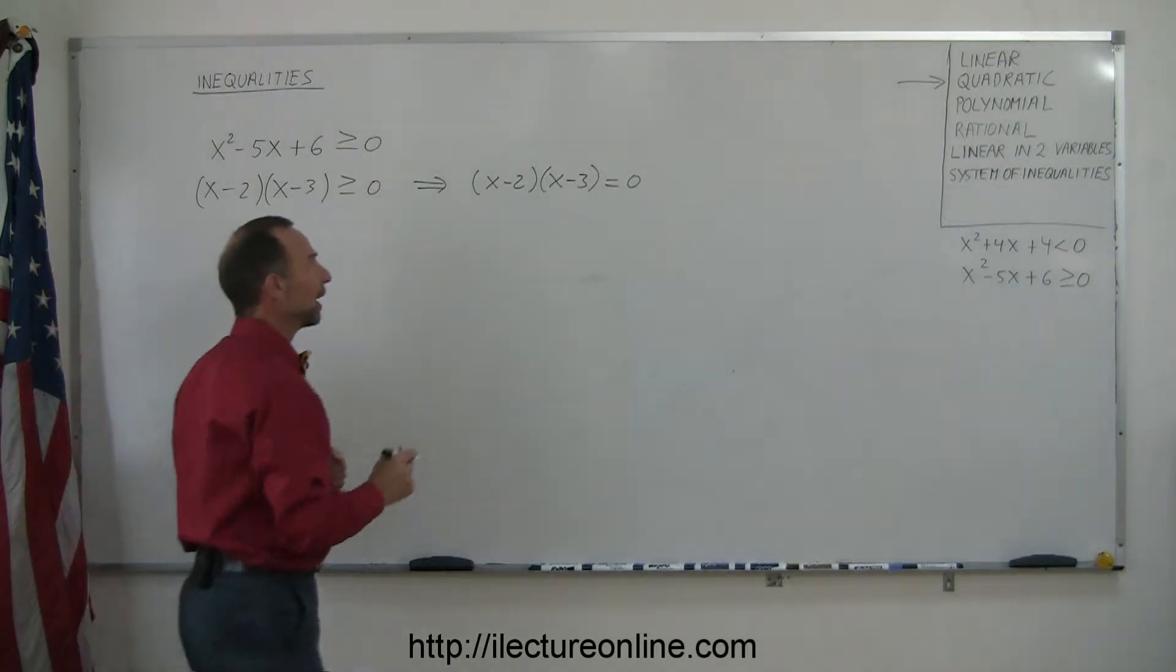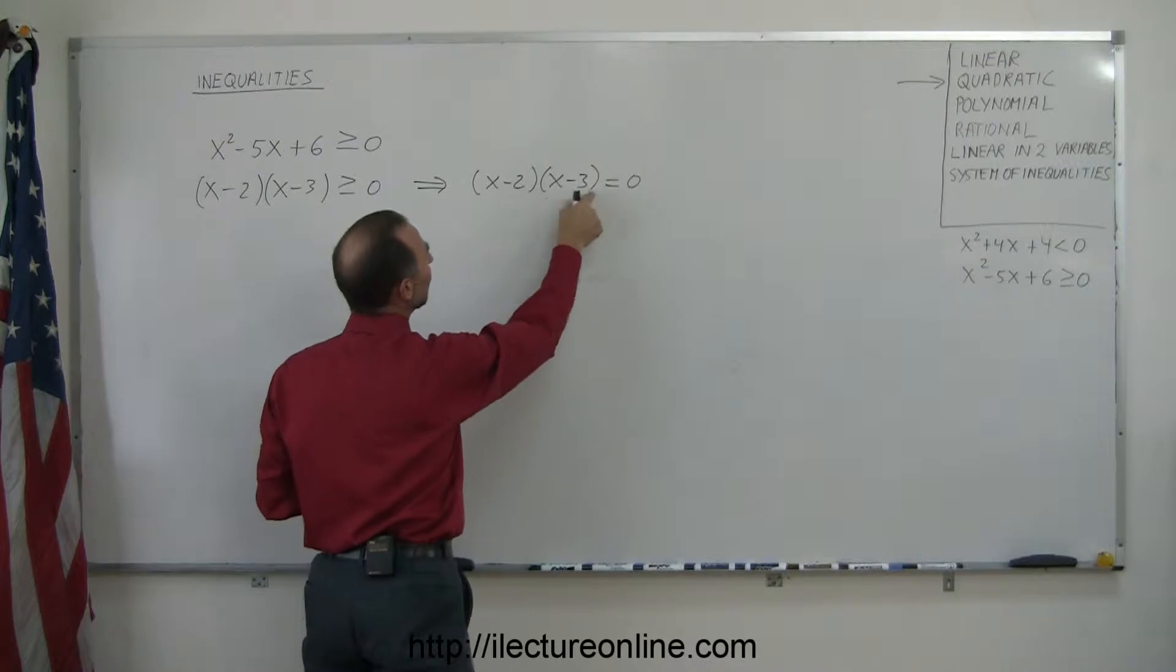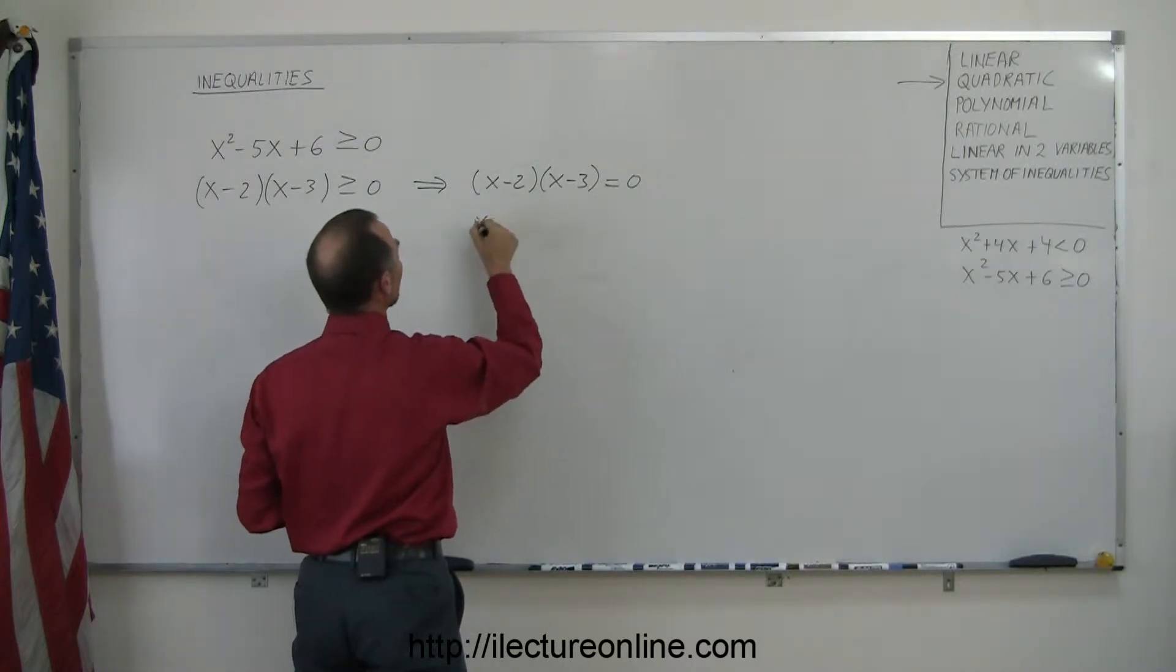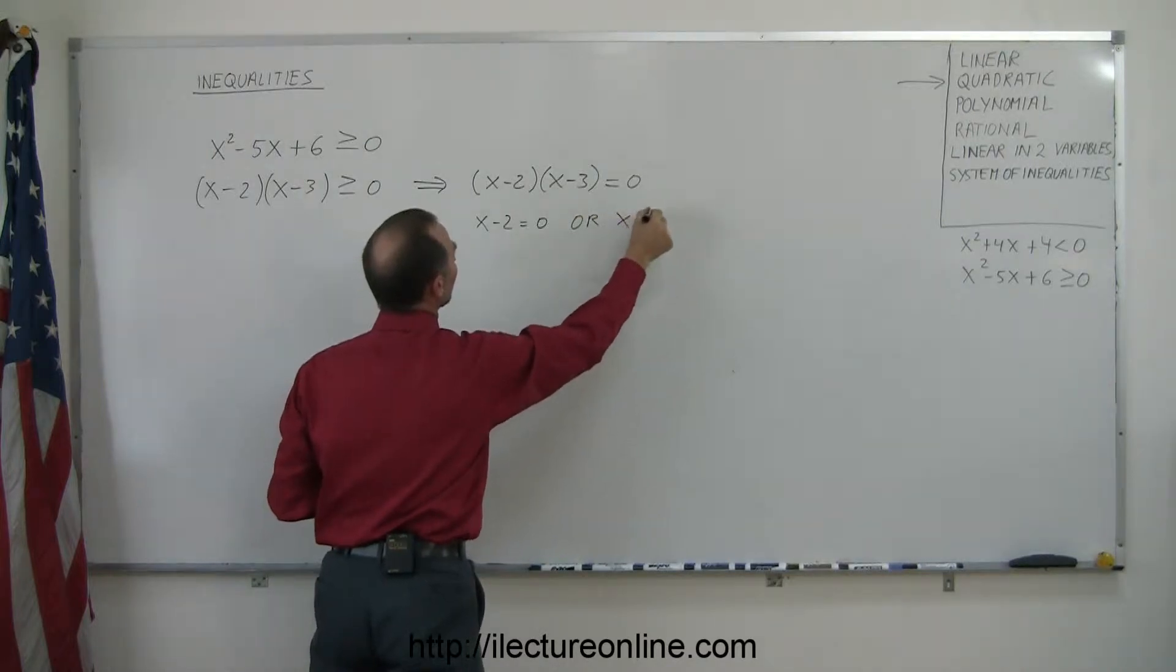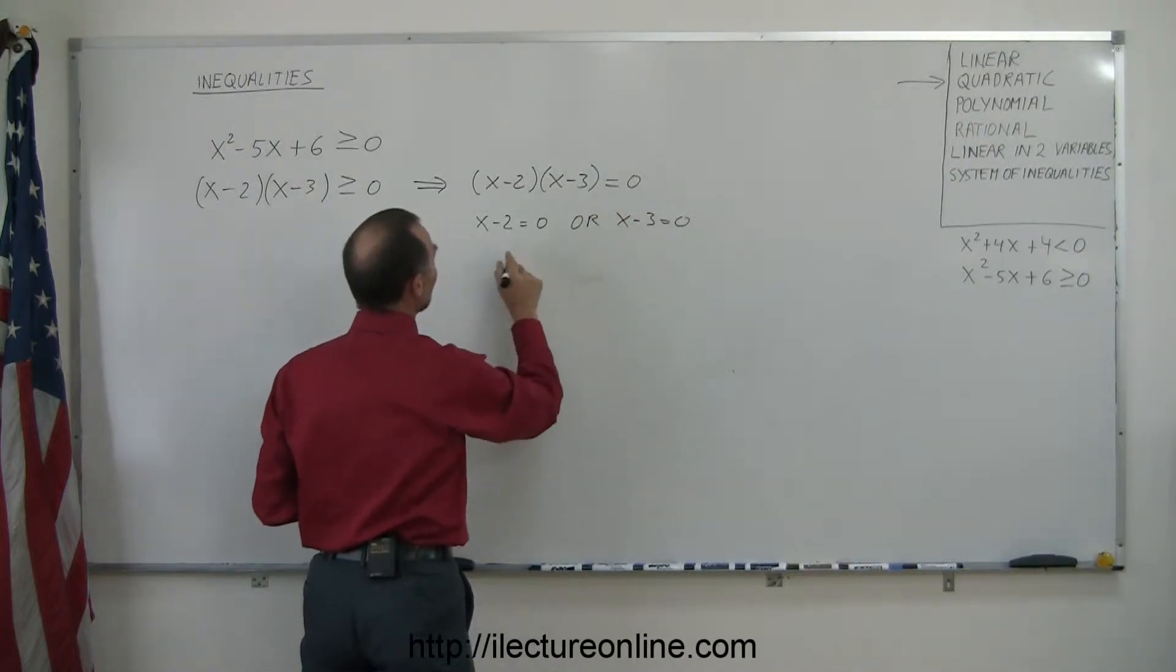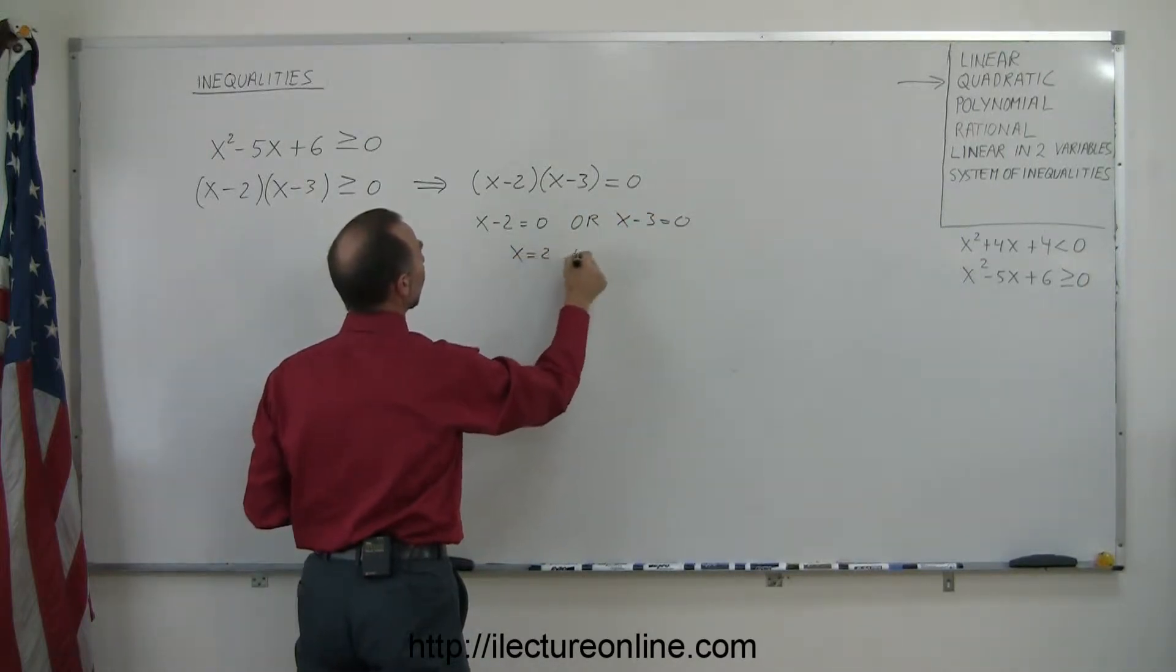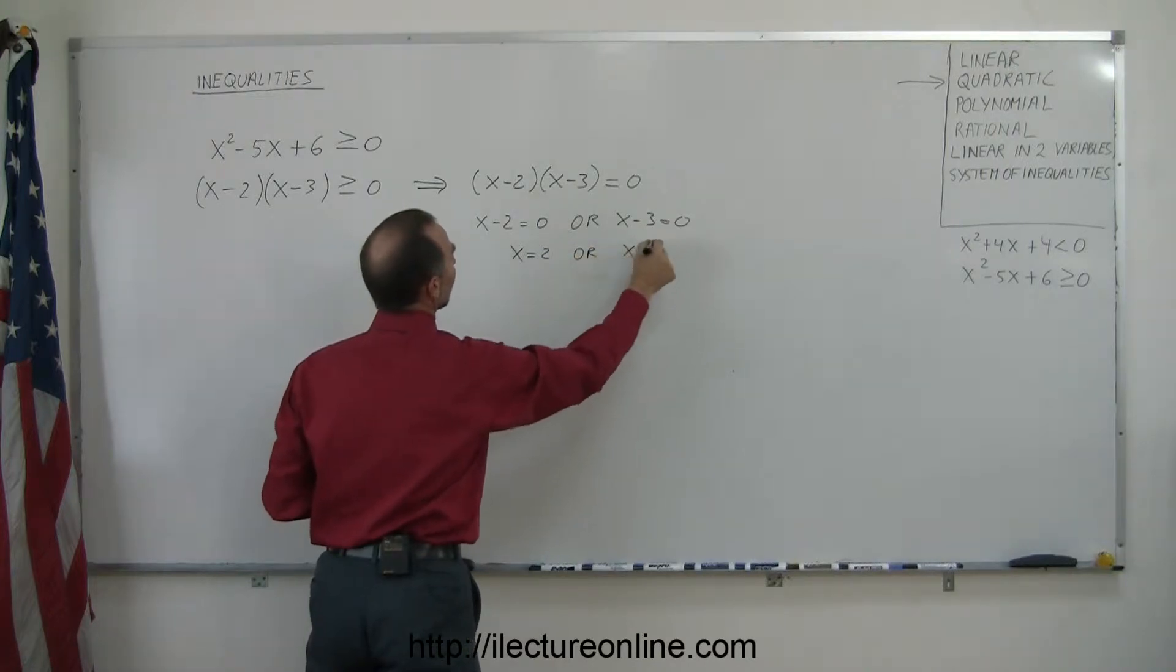So let's solve for that. If we multiply two binomials and we get 0, that means either the one binomial must equal 0 or the other binomial must equal 0. And that means that either x equals 2 or x equals 3.